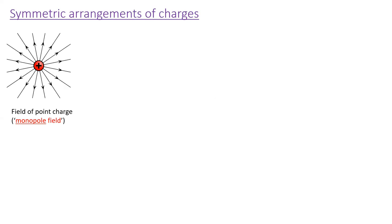Let's think about some symmetric arrangements of charges. One symmetric arrangement is a point charge, which we've already encountered several times in Physics 350 and Physics 202. We call this a monopole field, because it's a single pole — one pole in the center — and it should be familiar and straightforward to you.